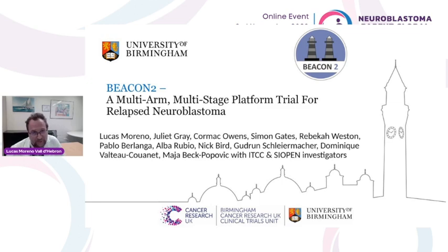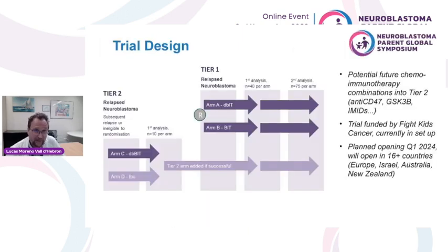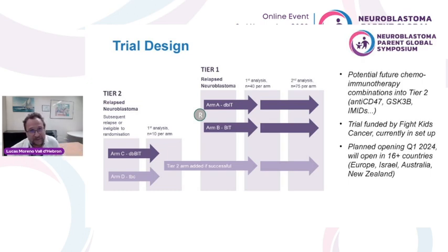We are now working to launch the BEACON 2 clinical trial, a continuation we're hoping to open early next year. It will have a large randomization starting with the winners of BEACON 1 — dinotuximab beta and bevacizumab — but will also have Tier 2 arms to test new combinations, with chemoimmunotherapy combinations aiming to improve on results we already have. We are planning to open this as a global trial quite soon.